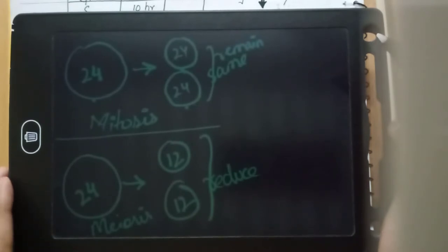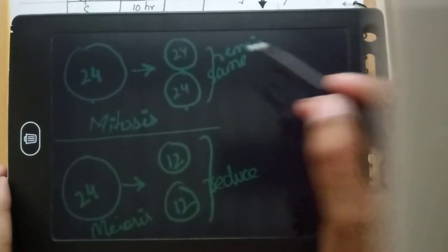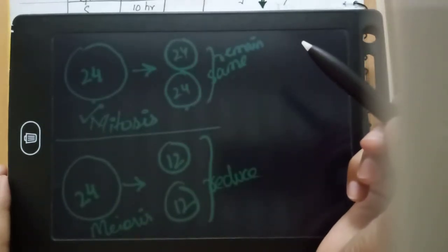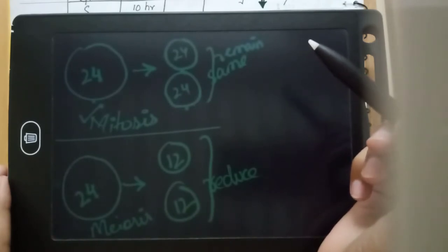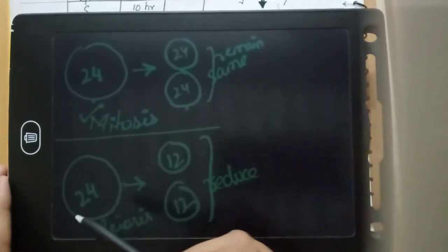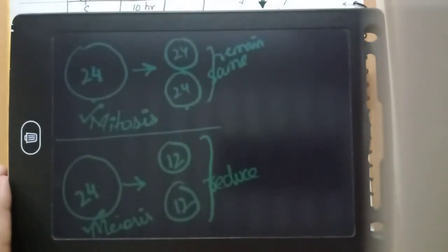Mitosis occurs in somatic cells such as skin, bones, hair, and nails. All the growth of our body — our size, hair growth, nail growth — is because of mitosis. But meiosis occurs in reproductive cells. In plants, spore formation, and in animals, the production of egg and sperm is through meiosis.